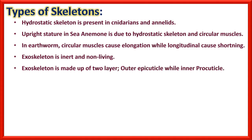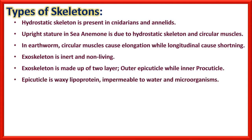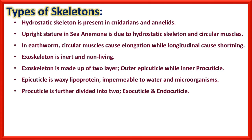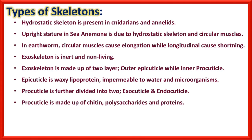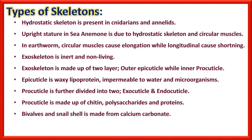Exoskeleton is made up of two layers — outer epicuticle and inner procuticle. Epicuticle is a waxy lipoprotein which is impermeable to water and microorganisms. Procuticle is further divided into exocuticle and endocuticle, and is made up of chitin, polysaccharides, and proteins. Bivalves and snail shells are made from calcium carbonate. The shell of a land snail is lighter and lacks hard minerals. Molluscan shells can grow with the animal as growth rings are apparent, so there is no need for molting.